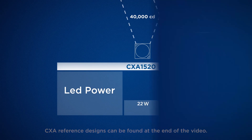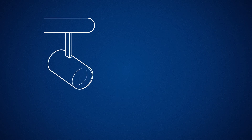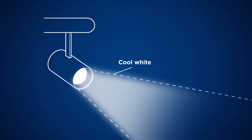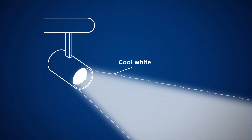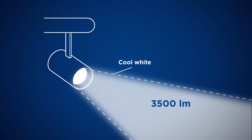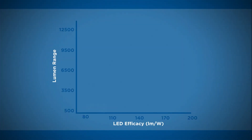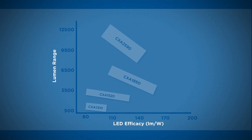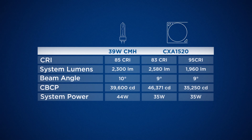Let's say you're trying to build a high output track light, and you know you need it to be cool white, and you want it to have a lumen output of about 3500. Looking at this chart, you can see that the CXA1850 gives you the best performance at this lumen level. Using this chart, you can find the best HD CXA for your lighting needs.